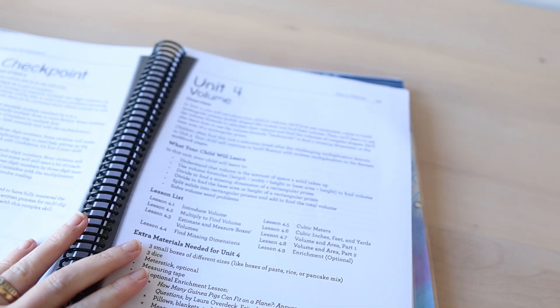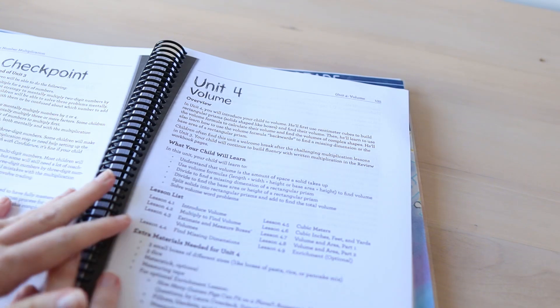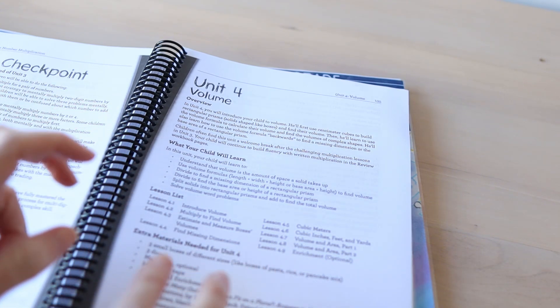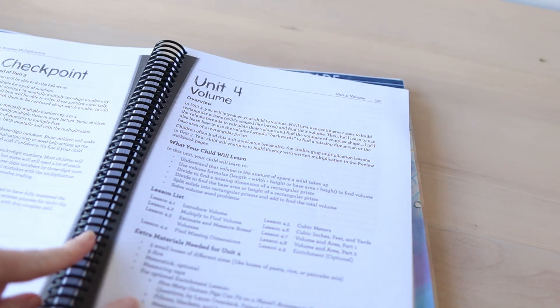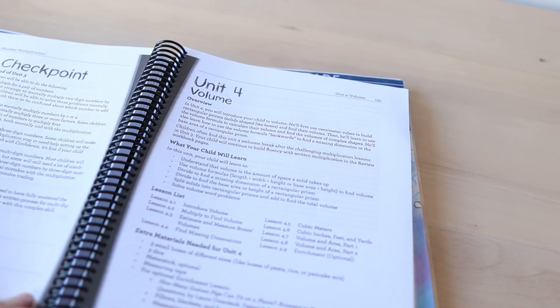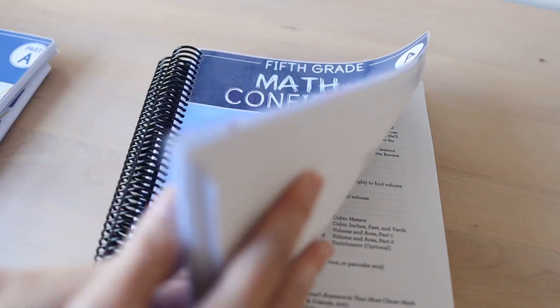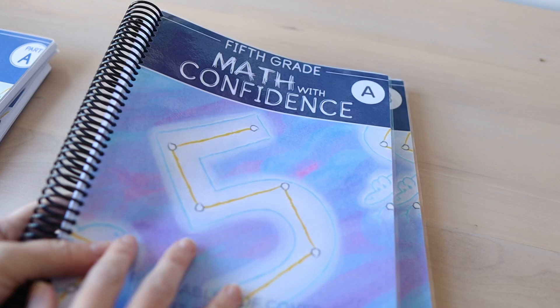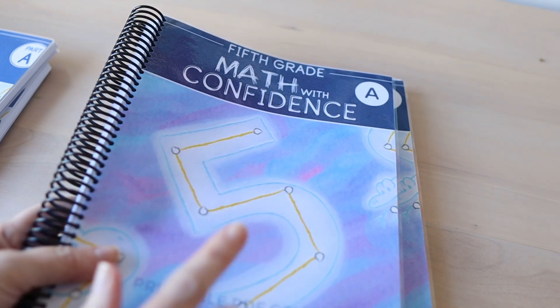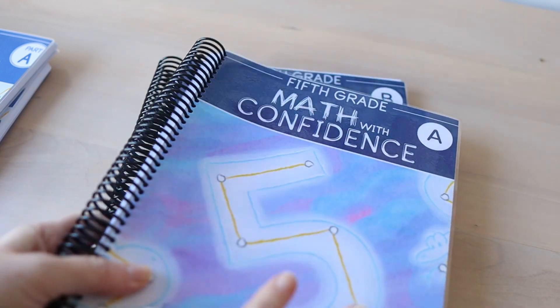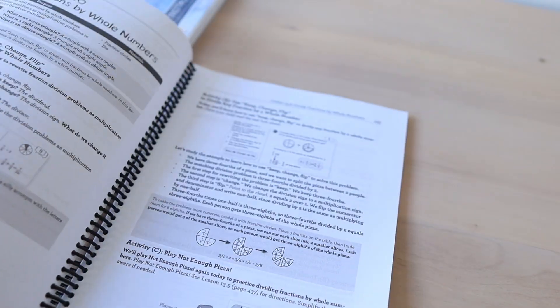There is also a book. Usually in the younger levels there's been multiple picture books that you can read for each unit. This one has one or two recommendations. I don't think they're picture books though. I believe they're chapter books and you read like a chapter or so with each unit. So if you want to add the literature aspect to your math, that's still available. It's just a little bit different which makes sense as they're getting older.